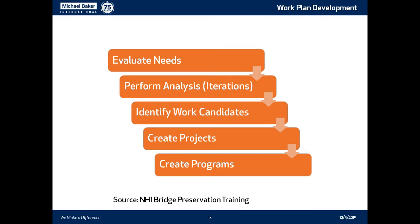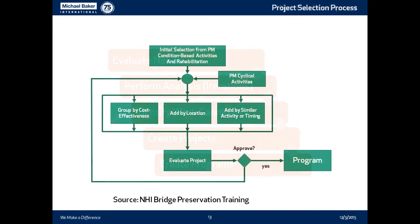In summarizing: you first evaluate your needs, you perform an analysis using Timetopour or whatever BRM will bring, or any other software. You identify the work candidates, put those into a project, and the projects go into a program. This is basically the philosophy of BRM — the new version of Pontis, which most of you are familiar with. Programs are the big thing, so you may have your bridge rehabilitation program and your preventive maintenance program, divided based on different types of funding.